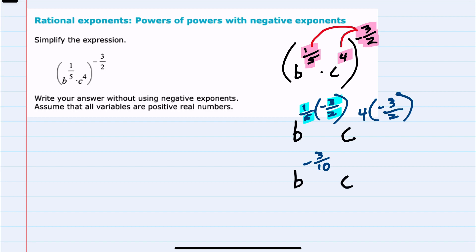And then for C, I can write this number outside as a fraction. Also a positive times a negative will be a negative. In the numerator, four times three is 12. And the denominator, one times two is two.